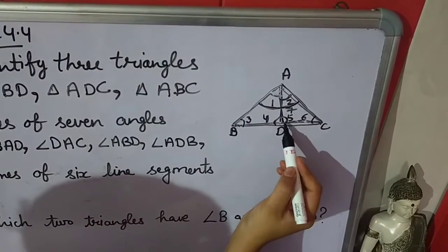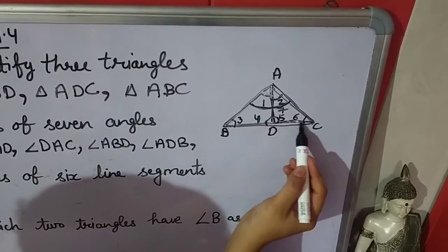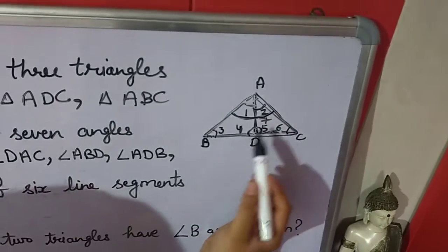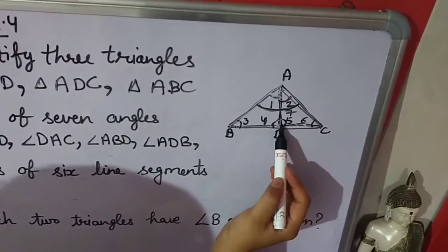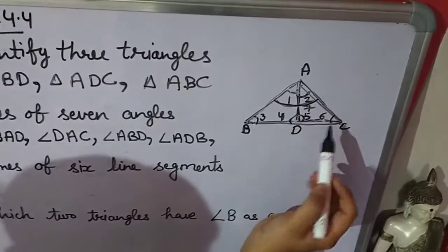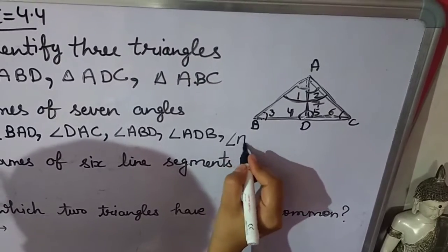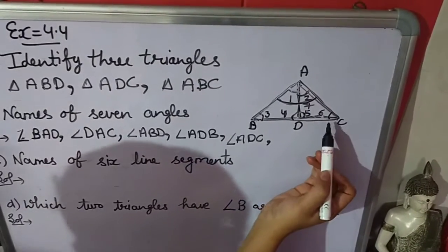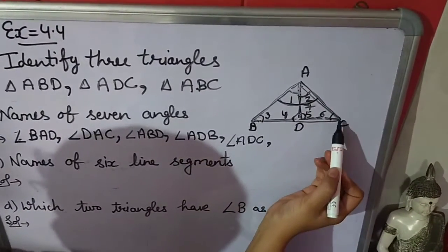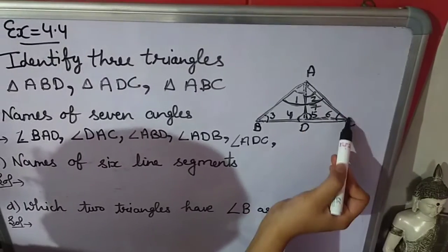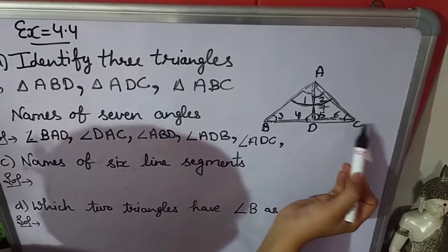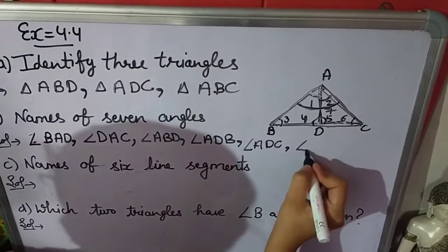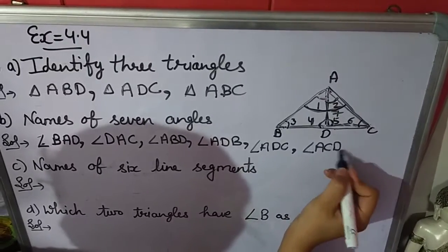Now the 5th angle. Arms are DC and DA, and the vertex is D. So angle 5 is angle ADC. Now look at angle 6. Arms are AC and DC, and the vertex is C. So angle 6 is angle ACD.